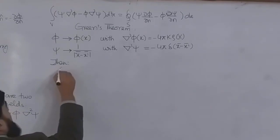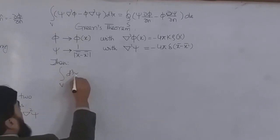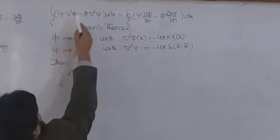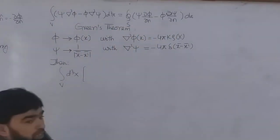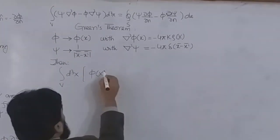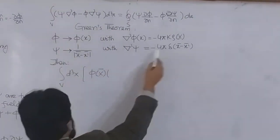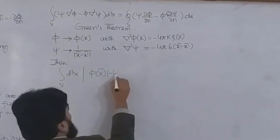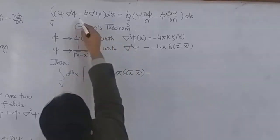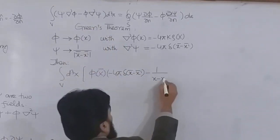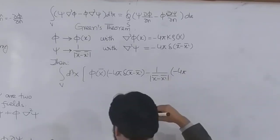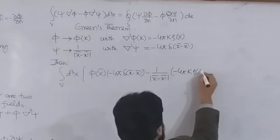This will be the volume integral ∫d³x. As I mentioned, the order matters — to compensate the minus sign you must write one term first and the other second. So I write φ(x) times ∇²ψ, which gives −4π δ(x − x'), minus 1/|x − x'| times −4π k ρ(x).